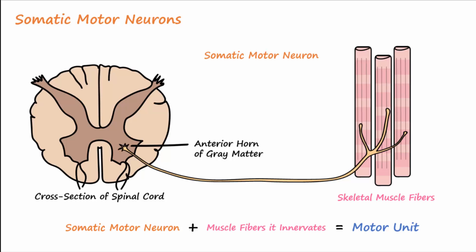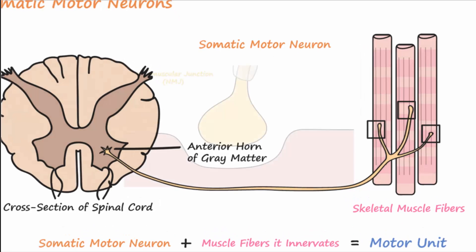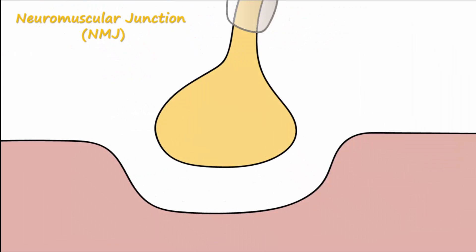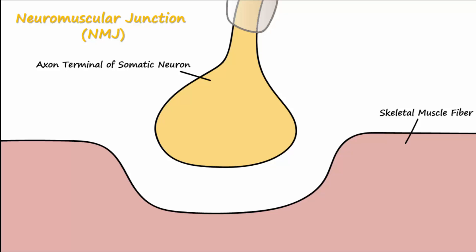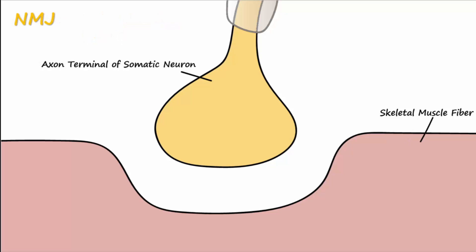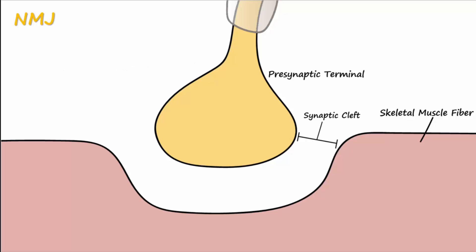Let's talk in more detail now about the neuromuscular junction. The neuromuscular junction is a synapse that is the site where the axon terminal of a somatic neuron innervates a skeletal muscle fiber. Notice that the cells never actually come in contact with one another. The space between the neuron and the muscle fiber is known as the synaptic cleft. The neuron portion of the NMJ is called the presynaptic terminal, and the muscle portion of the NMJ is called the postsynaptic membrane.